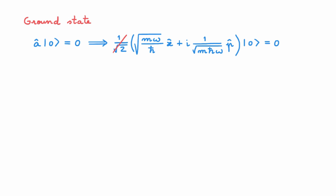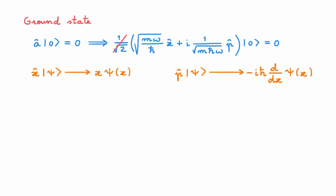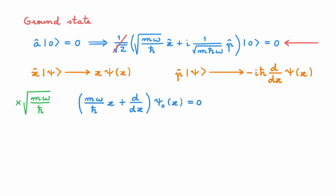What we want to do next is to rewrite this equation in the position representation. In the position representation, the position operator acting on a state ψ gives x multiplying the corresponding wave function, and the momentum operator acting on a state ψ gives iħ times the derivative with respect to x of the wave function. Using these results, we multiply through by √(mω/ħ) and rewrite the equation in the position representation. I've called the ground state wave function ψ₀. This gives us a differential equation — our task is to solve it to find an explicit form for the ground state wave function.